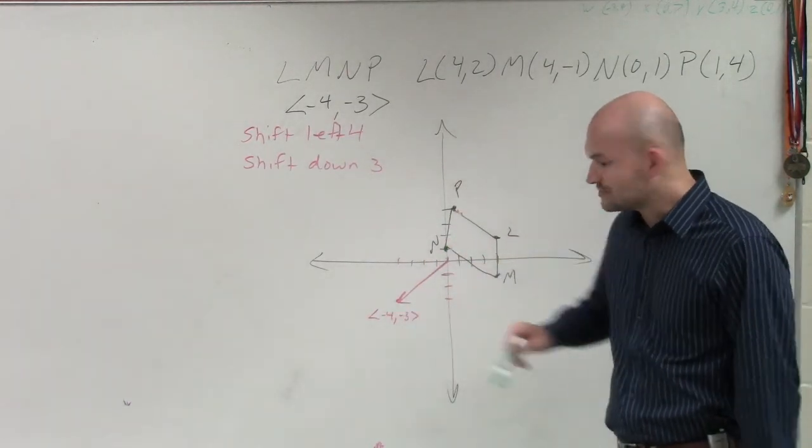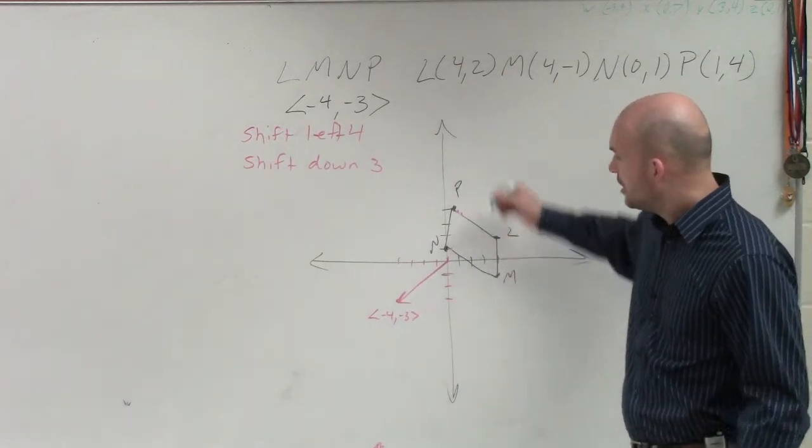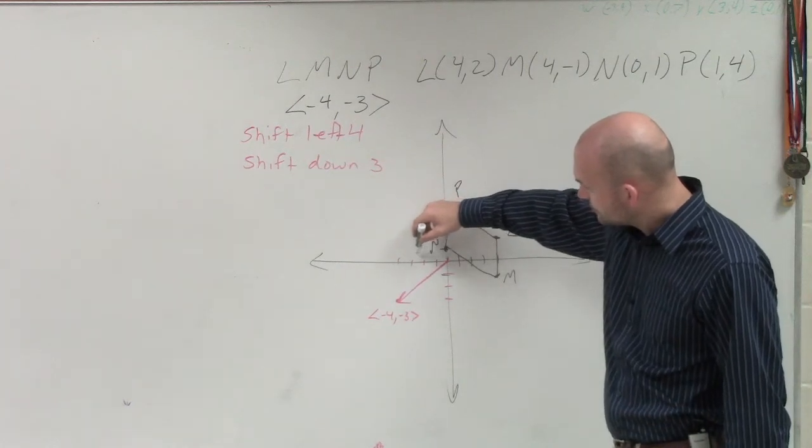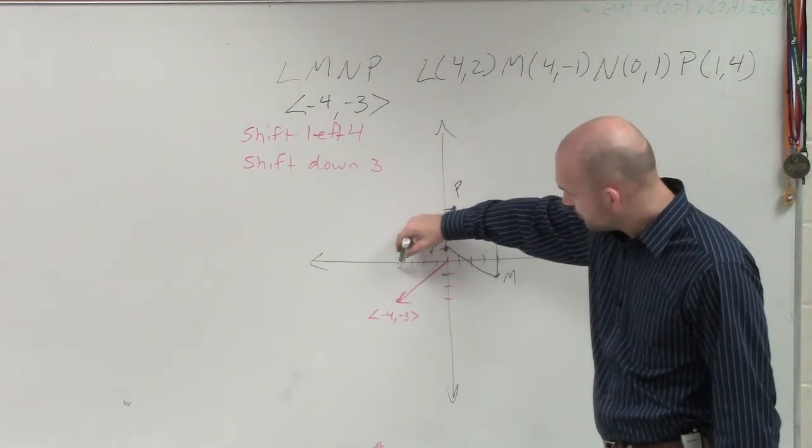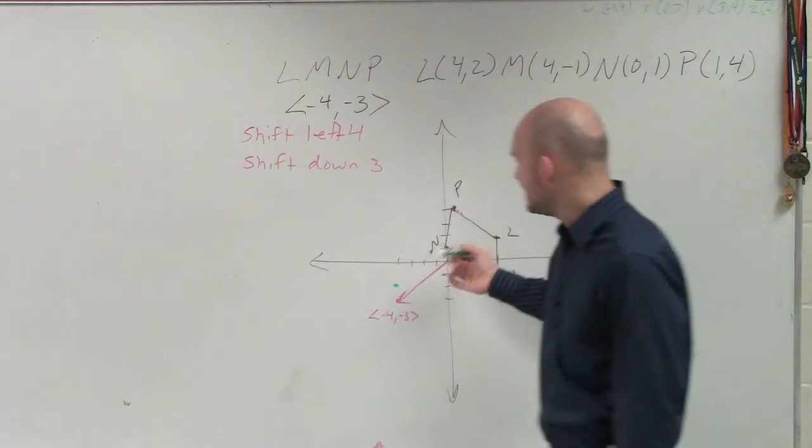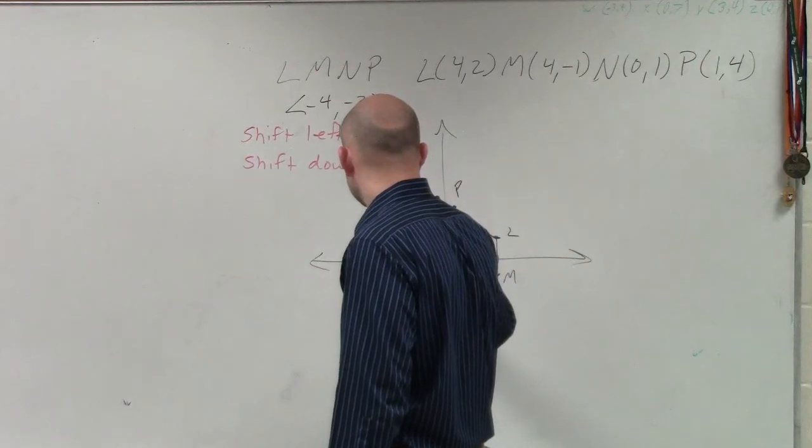So the transformational vector is negative 4, 3. So to find my new transform point, all I do is I pick each point, and I go negative 4... 1, 2, 3, 4, and then down 3... 1, 2, 3. So if that's N, this is now N prime.